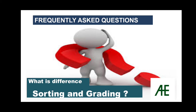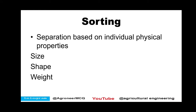In the case of sorting, the separation of any grains or fruit is done based on individual physical properties. For example, if I have onions and I have to separate them on the basis of their size, then that process is called sorting. Or if I have a single onion and I have to weigh it and make a classification according to that weight, then the process I am doing is also sorting.